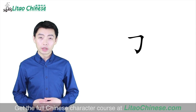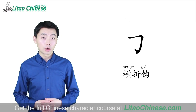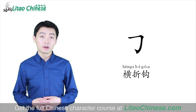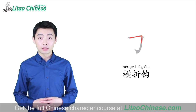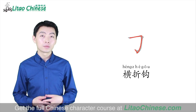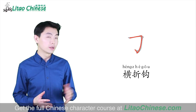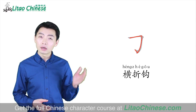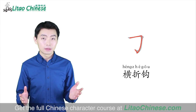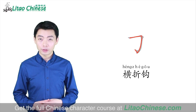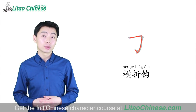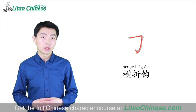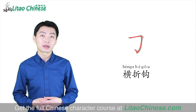This compound stroke is called 横折勾. It consists of 横折 and the small hook 勾. We already learned the two components in the previous lesson. This 横折勾 should be done in one stroke. Actually, all compound strokes should be written in one stroke, no matter how complex they are.